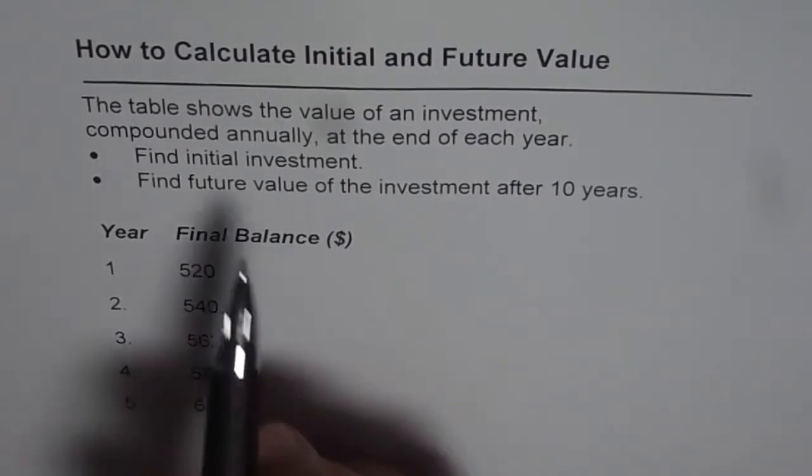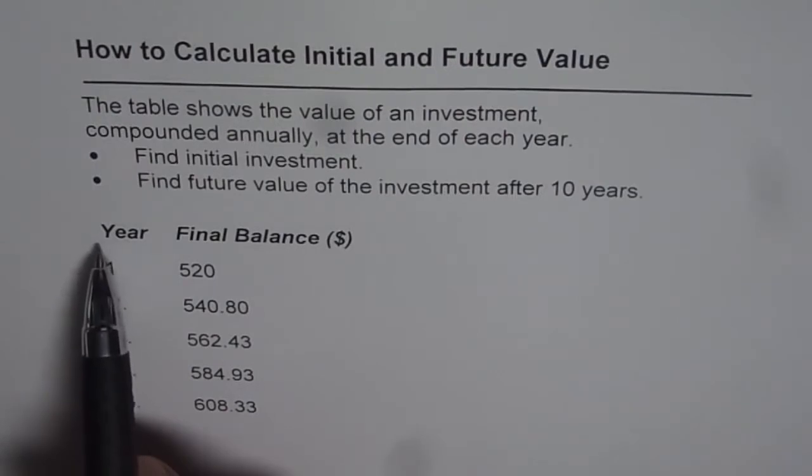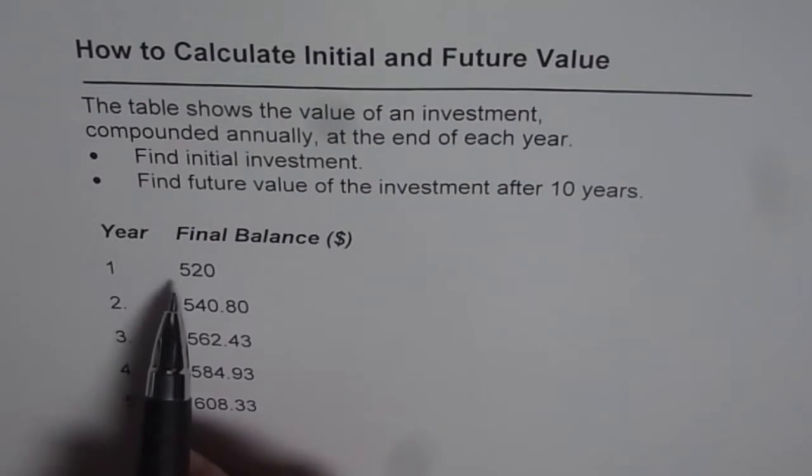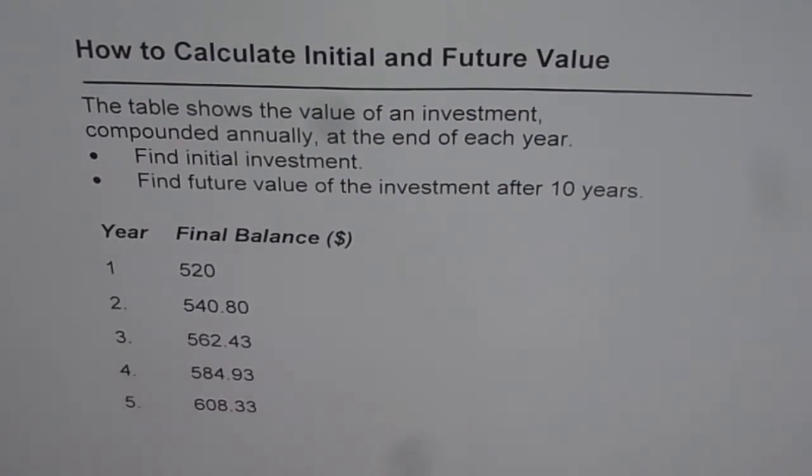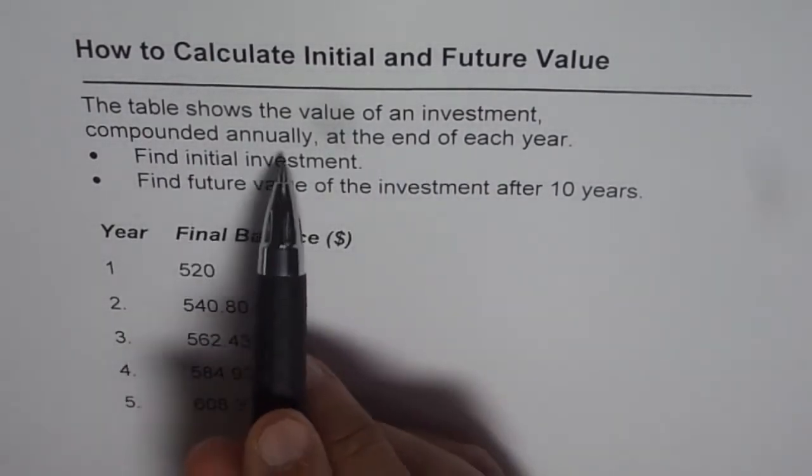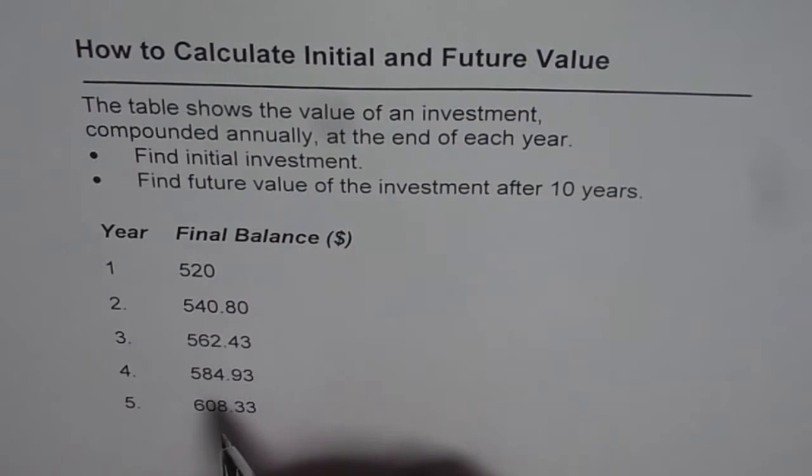Now here we need to find the initial investment, that means what was the amount initially deposited or invested which became 520 at the end of first year. Second, what is going to be its future value, means what will it be worth after 10 years. So as we know that the amount invested is compounded annually, every year it gets multiplied by a factor, it's an exponential function.